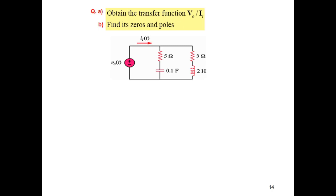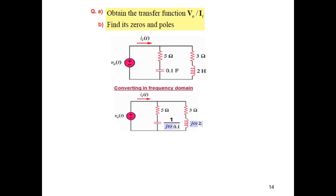In this example, we have to find the transfer function V0 over I0, and we need to find its zeros and poles. First, we convert it into the frequency domain, putting the capacitor as 1 over jωC and the inductor as jωL and 1 over jωC.